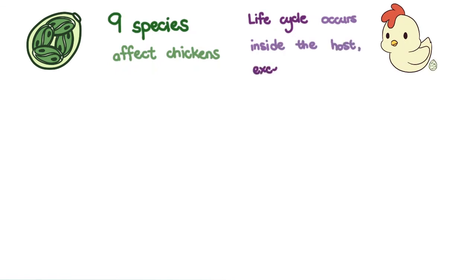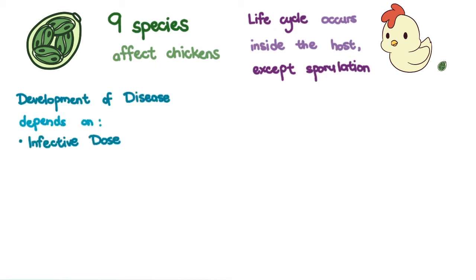To recap, coccidiosis in chickens is caused by Eimeria species. Nine species are known to affect chickens. A large portion of its life cycle occurs in the host, with only sporulation occurring outside. Development of disease is determined by the infective dose and some environmental and host factors.